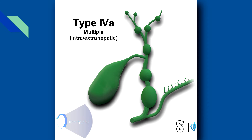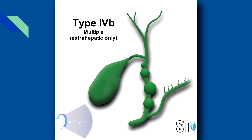Type 4 is further subdivided into 4A and 4B. Type 4A involves multiple cysts in both the intrahepatic and extrahepatic ducts, while Type 4B is extrahepatic only.